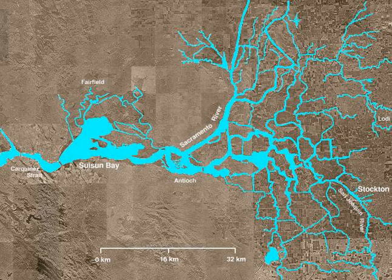The delta consists of approximately 57 reclaimed islands and tracts, surrounded by 1,100 miles of levees that border 700 miles of waterways. The southwestern side of the delta lies at the foothills of the California coast ranges, while to the northwest sit the lower Montezuma Hills.